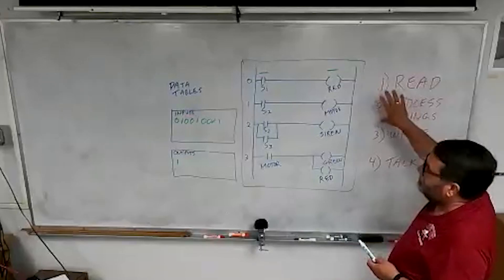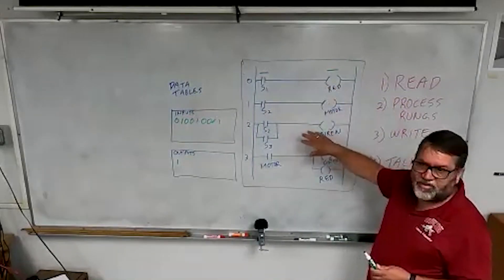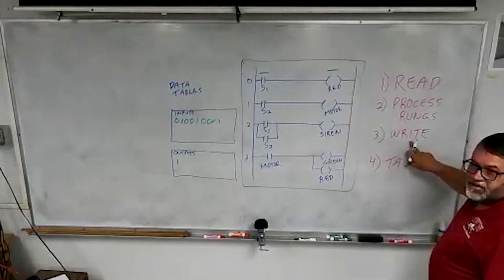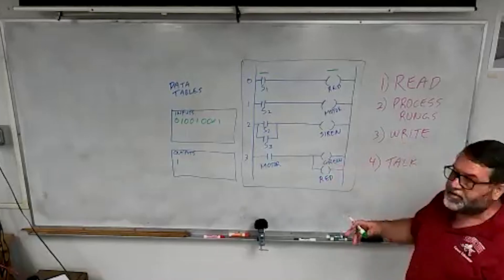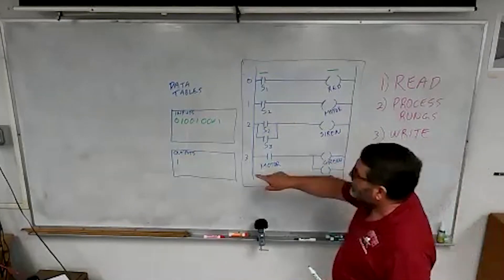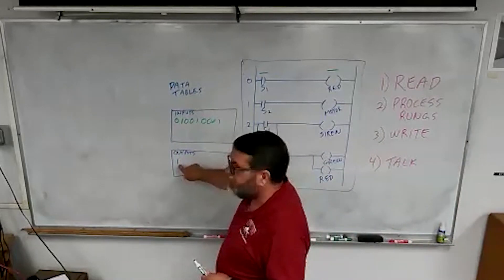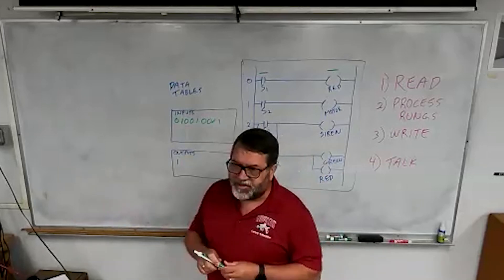So step two, they process the rungs. They go through and figure out what they're going to do with all these outputs. And then in step three, they write all the information, they send it out to the world. So in step three, it's going to go over and look at its output table and say, okay, this guy's hot. So I'm going to send a hot signal out to the world, and I'm going to turn on that red light.